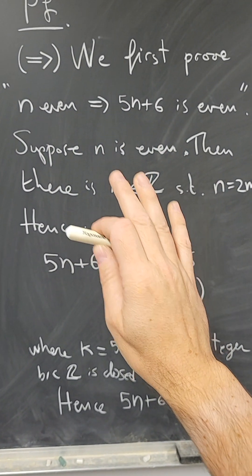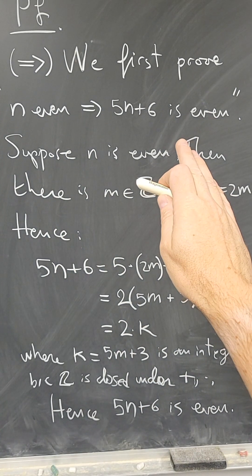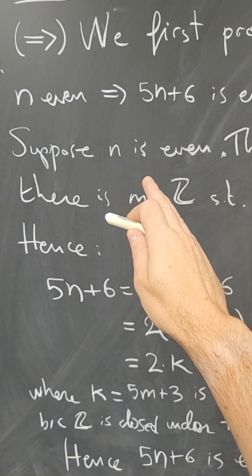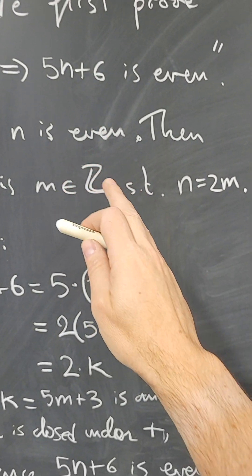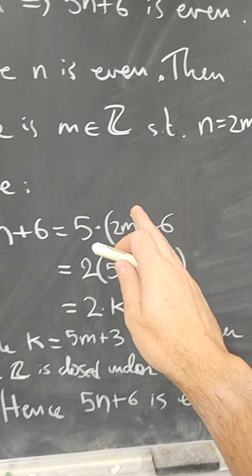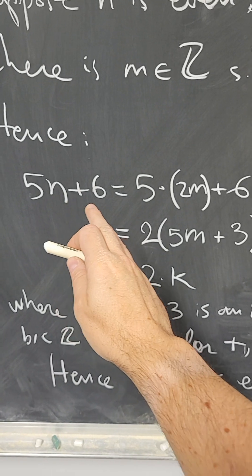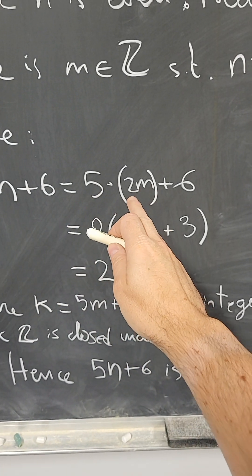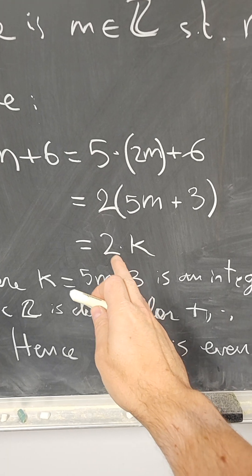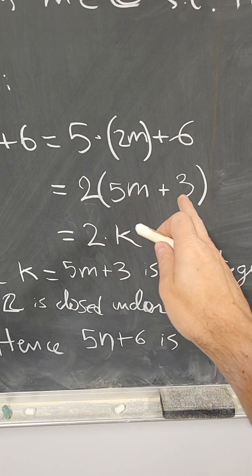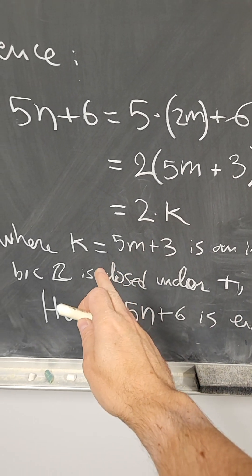But here right now, I'm only proving this implication. So we start by assuming that n is even, and therefore, by the definition of even, n is twice an integer m. And then 5n plus 6 will be 5 times that twice an integer plus 6.